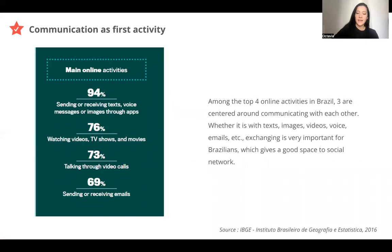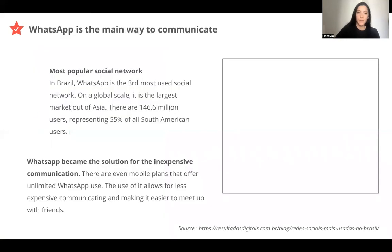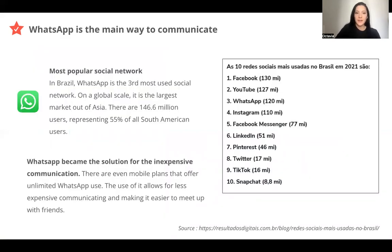Among all the online activities, the top four in Brazil — three are about communicating: sending messages, calling someone, sending videos and photos. This is a very important activity in Brazil. Most Brazilians use WhatsApp to communicate. It's the third most used social network in Brazil, and on a global scale, it's the largest market outside of Asia.